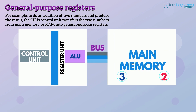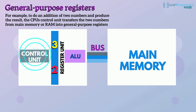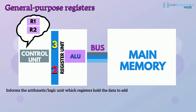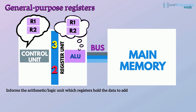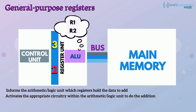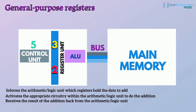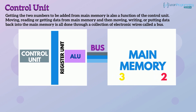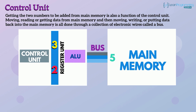For example, to add two numbers and produce the result, the CPU's control unit transfers the two numbers from main memory or RAM into general purpose registers. Then the control unit informs the arithmetic logic unit which registers hold the data to add, activates the appropriate circuitry to do the addition, and receives the result back from the ALU and stores it in another register. Moving or reading data from main memory, and writing or putting data back into main memory, is all done through a collection of electronic wires called a bus.